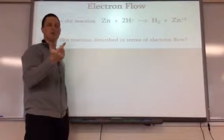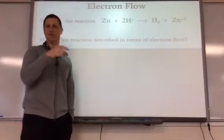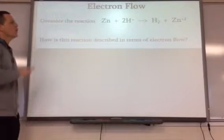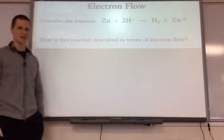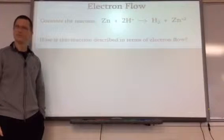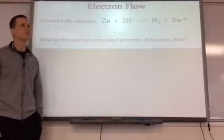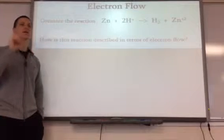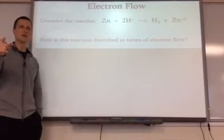When you have a precipitation reaction, nothing changes its oxidation number, so that would not be a redox. What is happening with the electrons in this reaction? Yes. From what to what? From the zinc? Zinc to the hydrogen. Into the hydrogen.